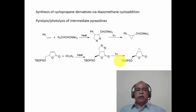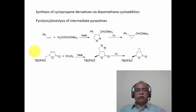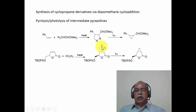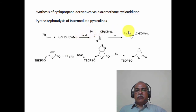Cyclopropane derivatives can be prepared by pyrolysis or photolysis of the intermediate formed by cycloaddition of diazomethane with olefins. The pyrazoline that is formed can be made to undergo loss of nitrogen to give the cyclopropyl derivative. Styrene reacts with diazomethane and the intermediate pyrazoline is photolyzed to give the corresponding cyclopropyl derivative by loss of nitrogen. Similarly, a lactone reacts with diazomethane to produce the pyrazoline, which is then photolyzed to produce the cyclopropyl derivative. Cyclopropanation is thus achieved by initial cycloaddition of diazomethane to the olefin, followed by photolysis of the pyrazoline.